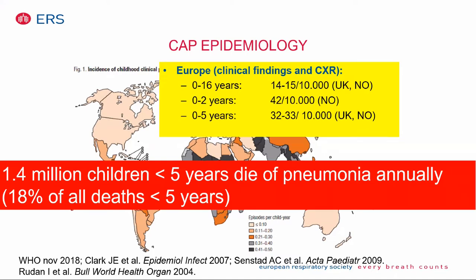Important to note that 1.4 million children die because of pneumonia annually in the world, and this is the single most common cause of death in children, accounting for 18% of all deaths below the age of five. If you compare this to the deaths from COVID-19 worldwide — which is around 500,000 deaths — you can see that childhood pneumonia is a much bigger problem.